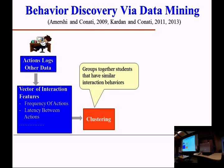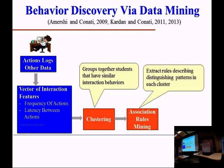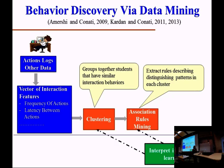Clusters give you groups, but they don't say much about why certain users are in certain groups or what behaviors make users belong to specific groups. Other techniques from data mining, such as association rule mining, can extract from a cluster what relationships identify membership in that cluster — the distinguishing patterns for each specific cluster. Once we have the clusters, we can try to see how they relate to learning. We can give clusters to experts, or if we collect pre- and post-test data, we can see if clusters correspond to different levels of learning.